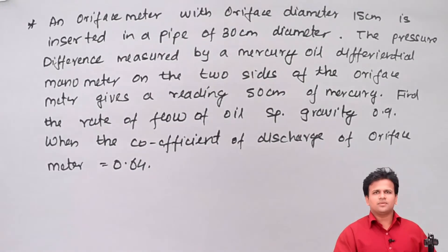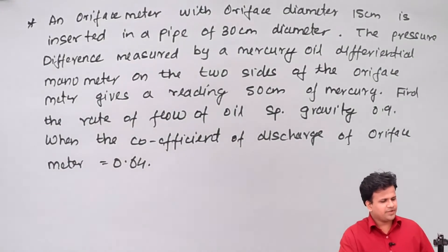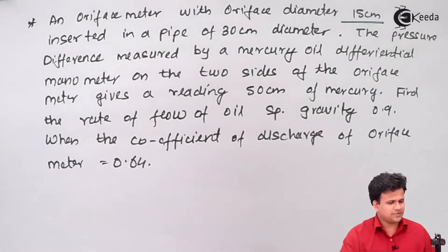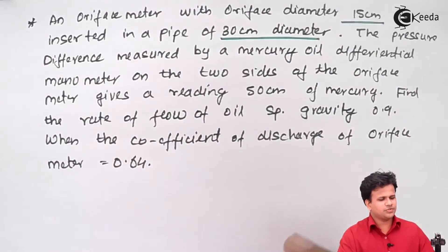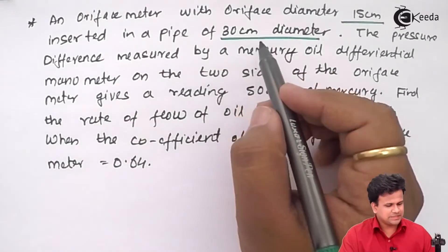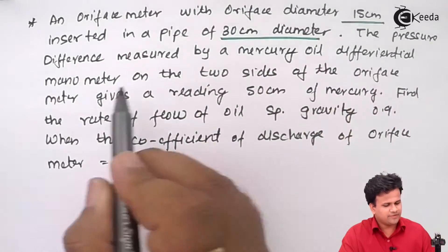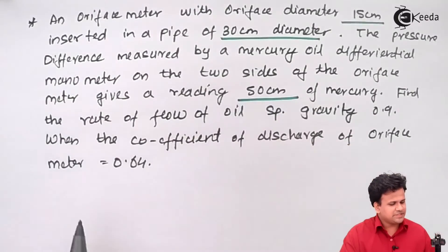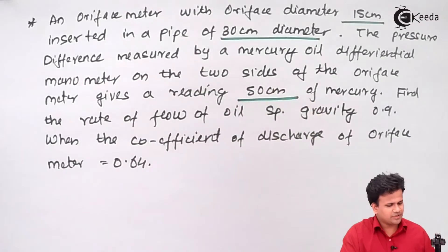We have a problem which states that the orifice meter with an orifice diameter of 15 centimeters is inserted in a pipe of 30 centimeter diameter. The pressure difference measured by the mercury and oil differential manometer on the two sides of the orifice gives a reading of 50 centimeters — that is the difference in the level of mercury.